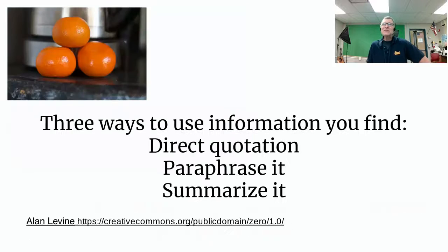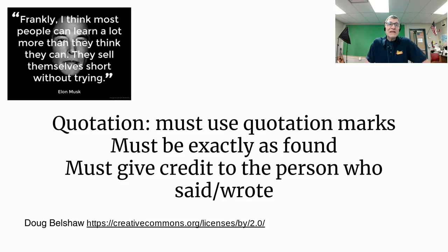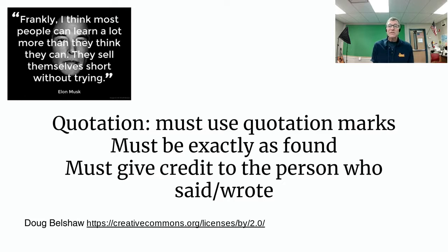There are three ways to use information that you find, at least as text. The first way is to use a direct quotation — you're probably pretty familiar with that. The second way is to paraphrase it. And the final way is to summarize it. Quotations are easy to do, but there are some rules you have to follow religiously. Number one, you must use quotation marks. Secondly, the quote must be exactly as found — you can't change anything about it. And finally, you must give credit to the person who said or wrote it.